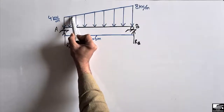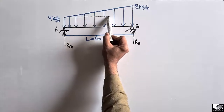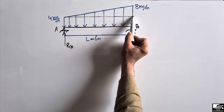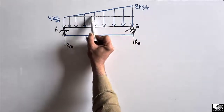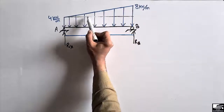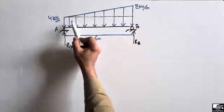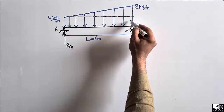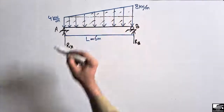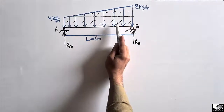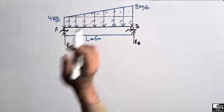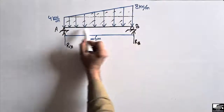To do this, we divide the trapezoidal load into a rectangle and a triangle. The lower portion is the rectangle and the upper portion is the triangle. We divide this load in order to have simplification when finding the total load.